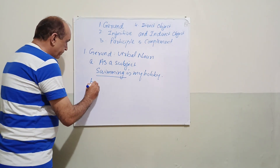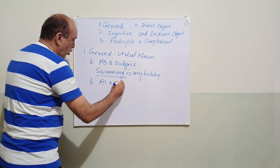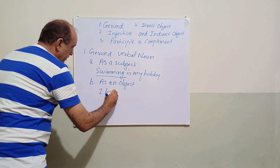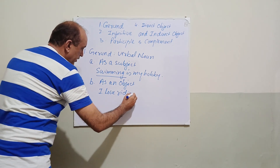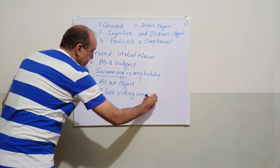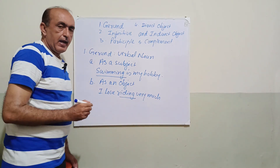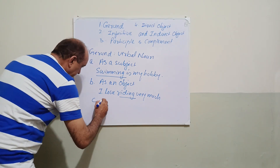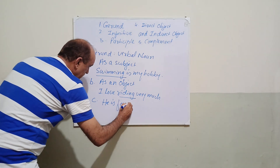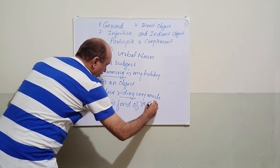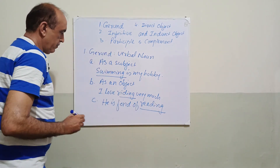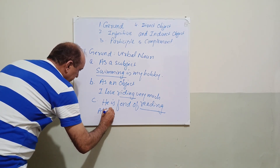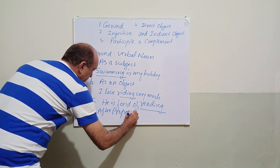The second example: gerund is used as an object. For example, I love writing very much — writing is gerund as an object. The third example: it comes after preposition. He is fond of reading. Gerund comes after preposition.